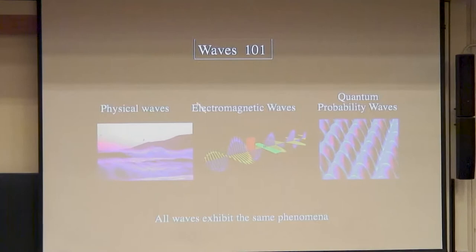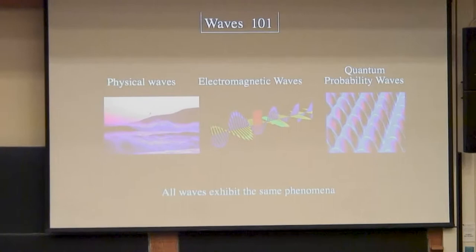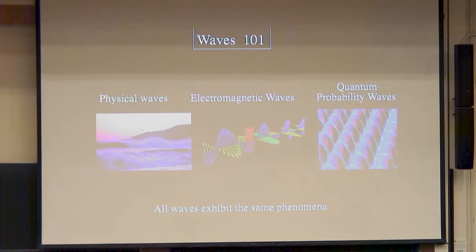There are lots of different kinds of waves: physical waves like ocean waves, electromagnetic waves, and quantum probability waves. The thing to remember is that a wave is a wave is a wave — just like a rose is a rose is a rose. Once you understand waves in one way, you understand waves in all ways.